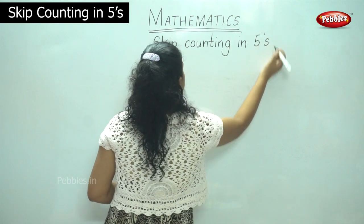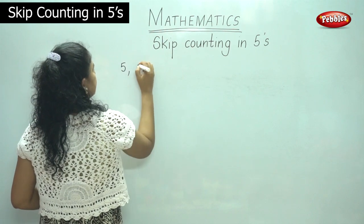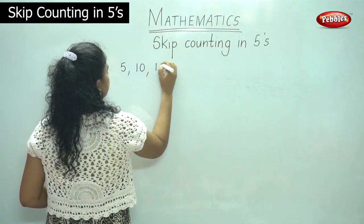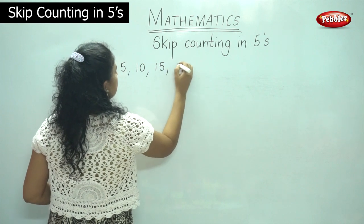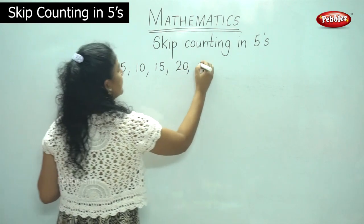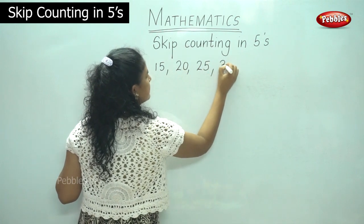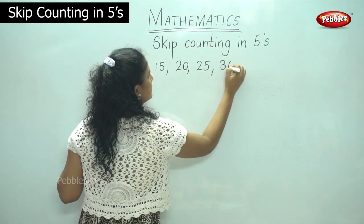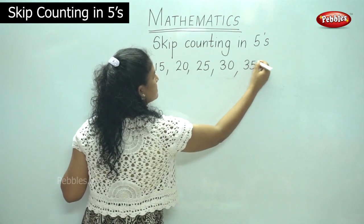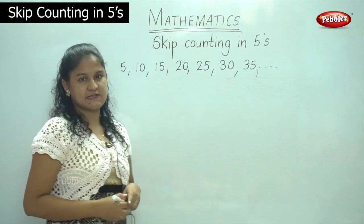So it will be 5, 10, 15, 20, 25, 30, 35 and it goes on. So that is one example.